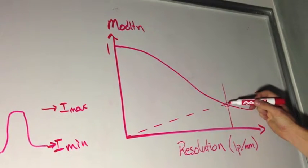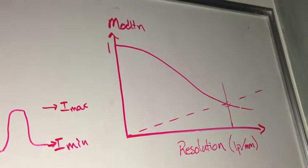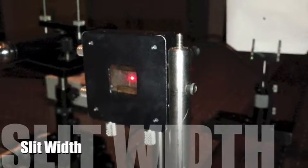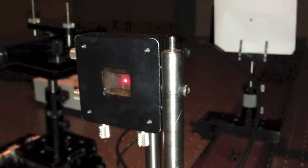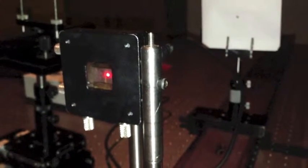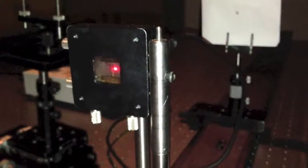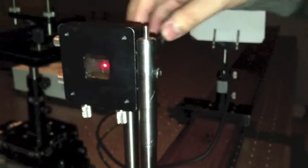For the next part, we set a slit at our best focus position and calculated the slit width from the inverse of our cutoff frequency. By using the micrometer and power meters after the slit, we measured the line spread functions.